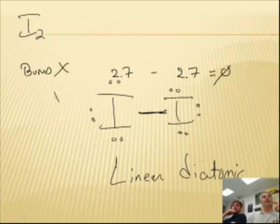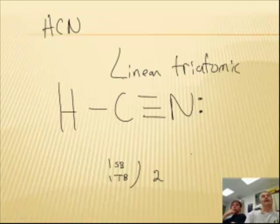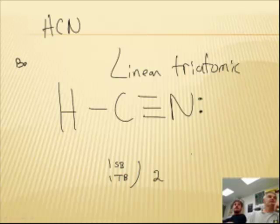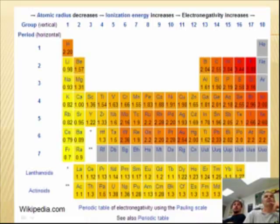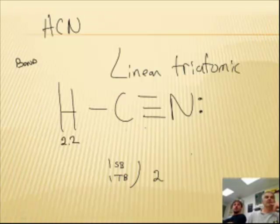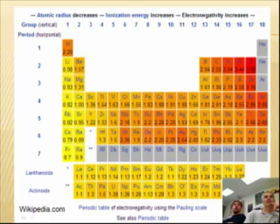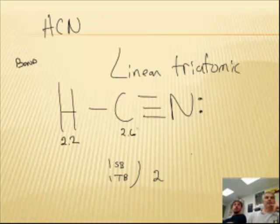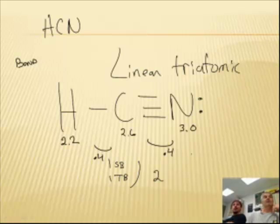And actually, the shape test, it does pass, by the way, because they're different atoms, and it's just based on the bond if you've got a linear diatomic one. And then HCN, and this is the interesting one. So let's talk about the bond test. Hydrogen's 2.2, carbon is 2.6, nitrogen is 3.0. So the difference here is 0.4, and the difference here is 0.4.